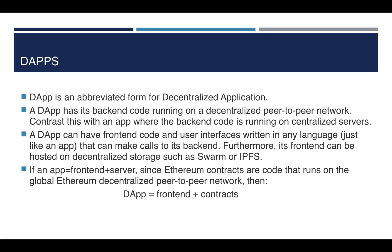Now let us see what distributed apps — or dApps — are. A dApp has back-end code running on a decentralized peer-to-peer network, such as smart contracts. This contrasts with a traditional app, which has back-end code running on a centralized server. In a dApp, the back-end code runs on each peer in the network rather than on one single centralized server.